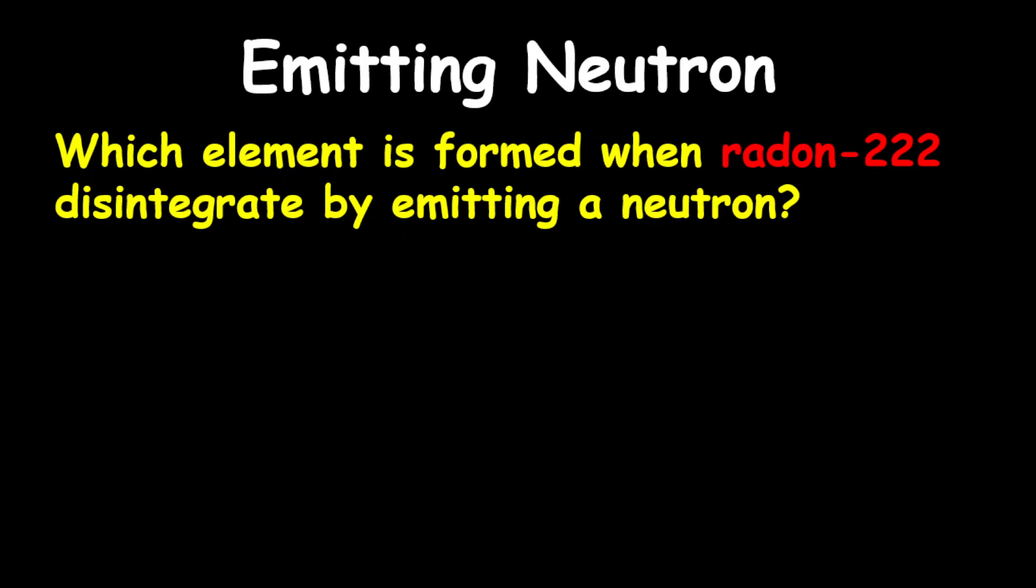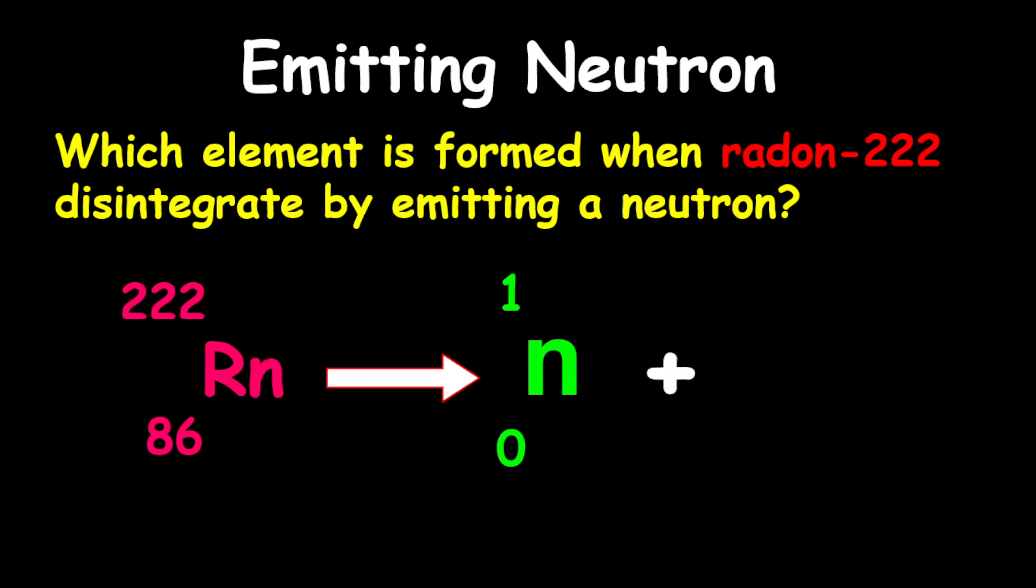Which element is formed when radon-222 disintegrates by emitting a neutron? Now, radon proton number is 86. It emits a neutron. Therefore, to find the new element, what you're going to do is to take away one from 222. Therefore, the new mass is 221.